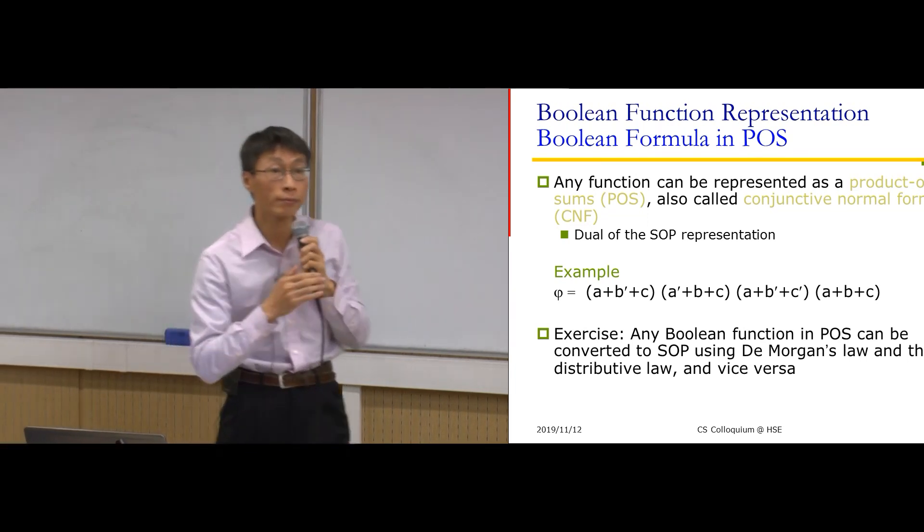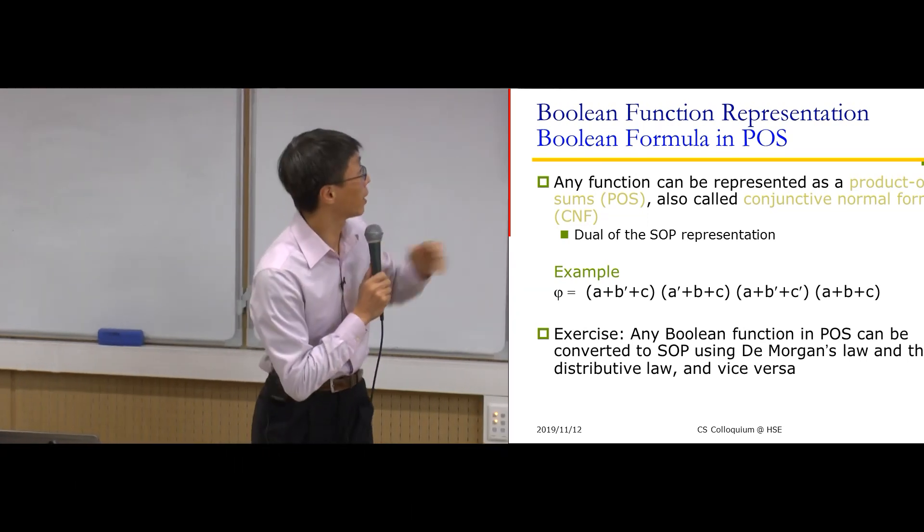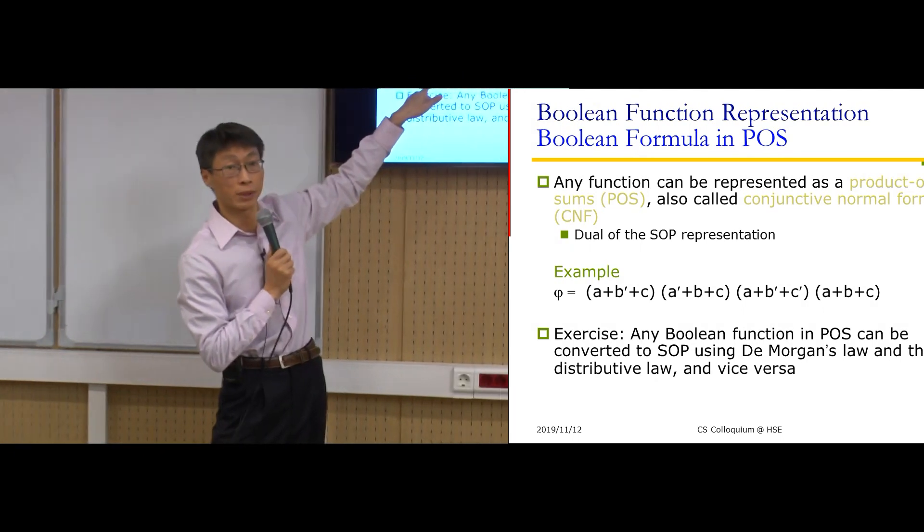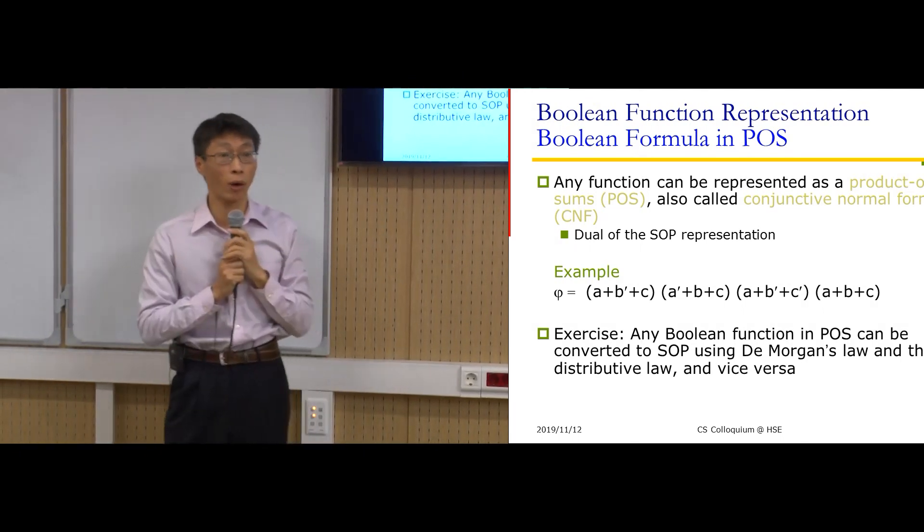For Boolean formula, we are interested in sum-of-product expressions. For SAT solving, we are more interested in conjunctive normal form or product-of-sum expressions. These are two special forms of the Boolean formula usually used in synthesis or Boolean reasoning. The plus sign here is disjunction — the OR operator.